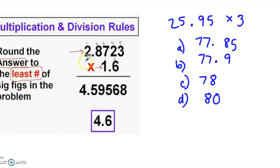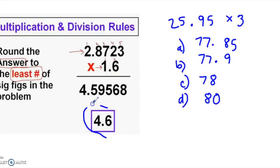Here's a straightforward example. Let's say you're in the lab and you measure something out to 2.8723 — it has 5 significant figures. Then you measure 1.6, which has 2 significant figures. Your calculator gives you a long answer, but what you should record is 4.6, because 1.6 has the least number of sig figs in the problem.